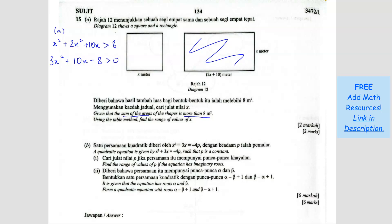Bring the 8 over, it becomes negative 8, more than 0. So first step, we make it equal 0 so that we can factorize. What you get is (3x minus 2)(x plus 4). So x equals 2/3 and x equals negative 4.